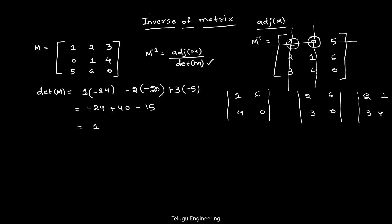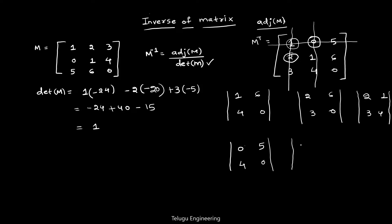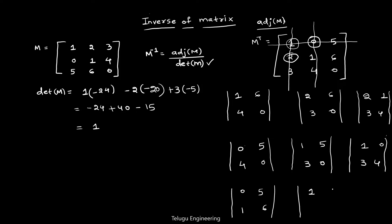For element 5 we get [2, 1; 3, 4]. For element 2 we get [0, 5; 4, 0]. For the next element we get [1, 5; 3, 0]. For element 6 we get [1, 0; 3, 4]. Then [0, 5; 1, 6], then [1, 5; 2, 6], and finally [1, 0; 2, 1].